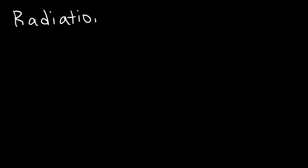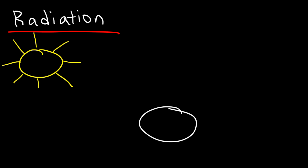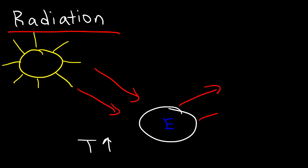A third method of heat transfer is radiation. Radiation occurs whenever heat is transferred through empty space by electromagnetic waves. A good example is the sun: thermal energy from the sun travels through empty space, reaches the earth, and causes the earth's temperature to rise. At night, the earth emits infrared waves, cooling itself down. In fact, every object with a temperature above zero degrees Kelvin emits some form of radiation.